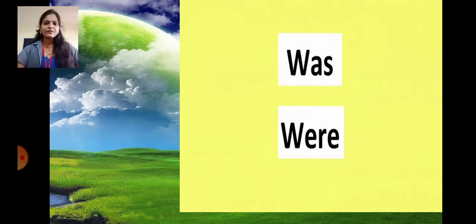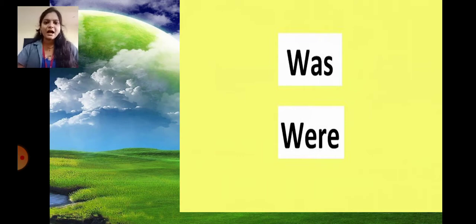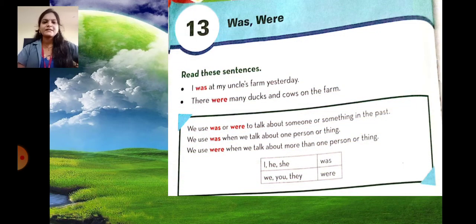So students, before learning about was and were, we have to know where to use was and where to use were. You must be knowing that was and were are used in past tense. So let's see the respective rules — where and how to use was and were. First of all, let's read these sentences from our textbook.